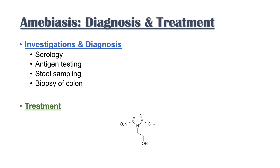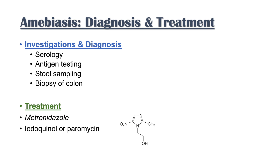Once you've made the diagnosis, how do you treat it? Treatment involves the use of metronidazole. For intestinal amoebiasis — just the GI symptoms — metronidazole can help clear the infection. For a more invasive picture or systemic illness, including cysts or invasive disease, we might also use iodoquinol or paromomycin. These are effective treatments for the different presentations of amoebiasis.